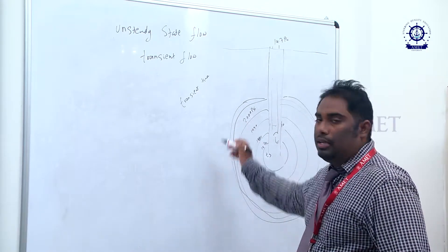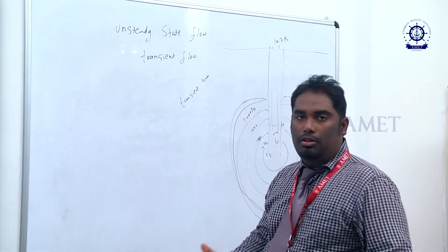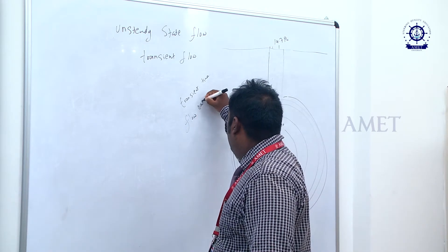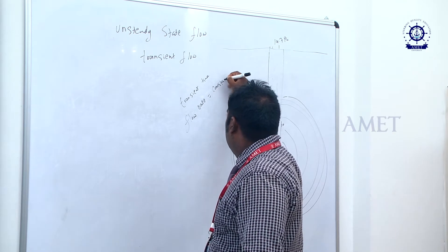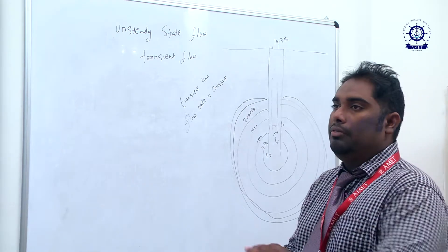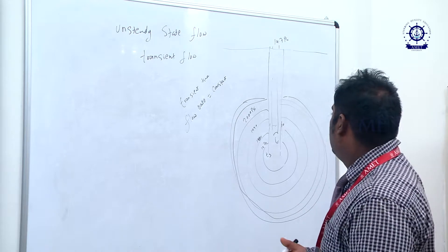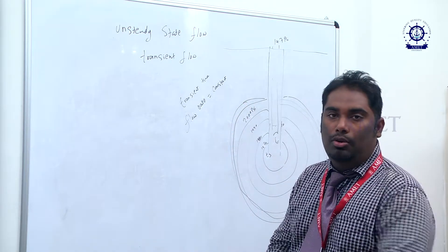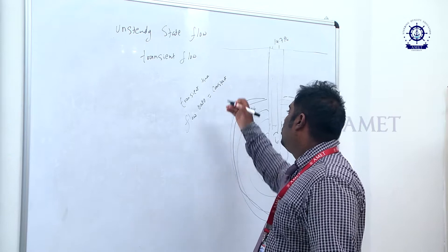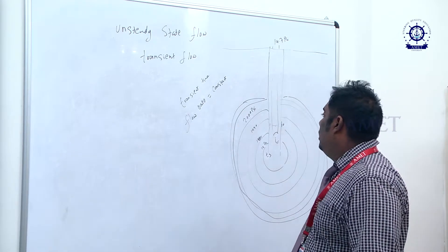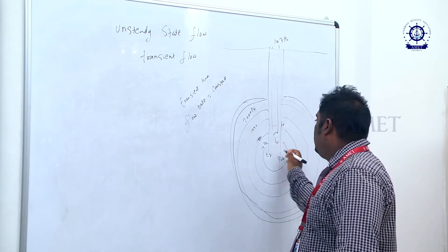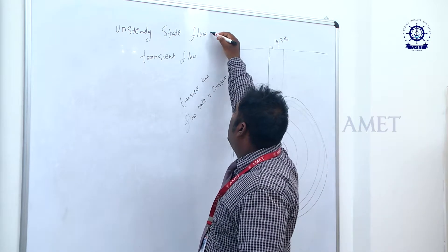During this particular transient time, the flow rate will be constant. That means if it is producing 10 barrels per hour, the second hour will also be expected to produce 10 barrels. The flow will be constant until it reaches the outer boundary. That particular time we name as transient time, and the flow rate will be constant. This condition — the flow experienced during the pressure drop from PWF to the outer boundary — we name as unsteady state flow.